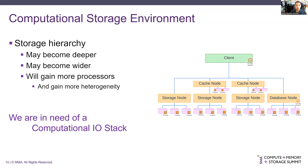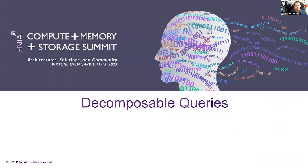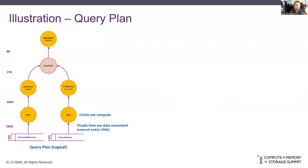In order to leverage these resources, we think we are desperately in need of a computational IO stack — how do we distribute data accesses and processing across this whole hierarchy? That leads us to our approach to computational storage, which we call decomposable queries. To illustrate decomposable queries, I show a logical query plan on the left with functions or operators in circles, and purple arrows representing data movement through these functions.